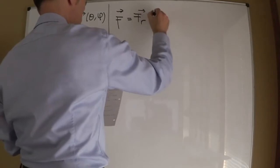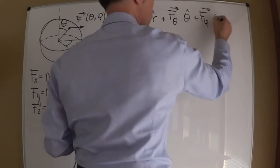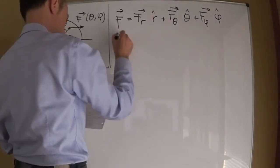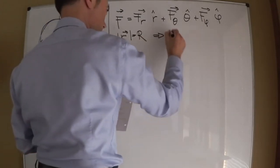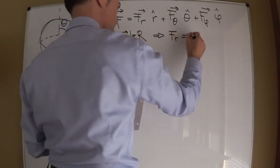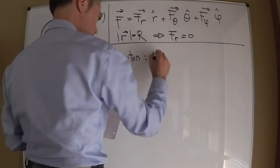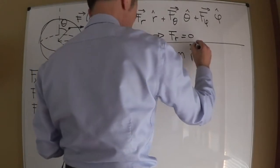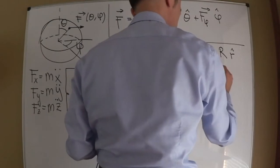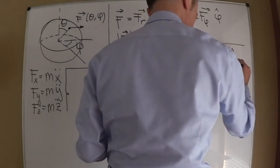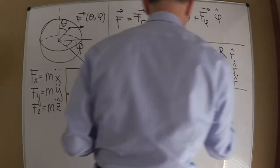F = F_r r-hat + F_theta theta-hat + F_phi phi-hat. Because the magnitude of r is capital R, the radius of the sphere, the force along the radial direction, F_r, is zero. Back to Newton's second law in spherical coordinates: r-arrow in spherical coordinates is written as R r-hat, so r-dot is R r-hat-dot, and r-double-dot is R r-hat-double-dot.